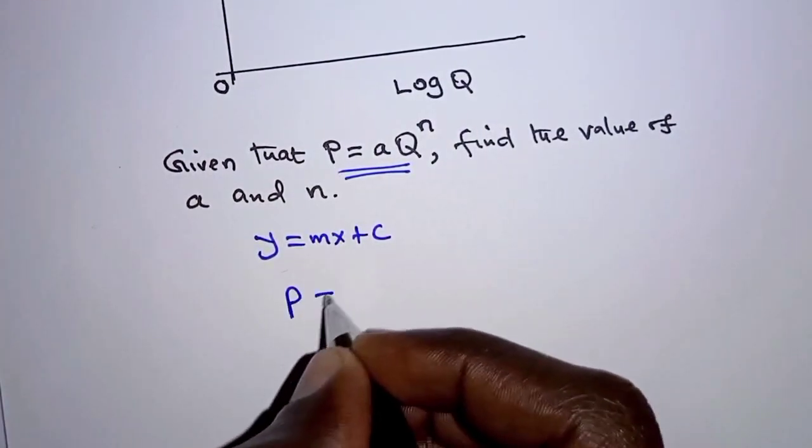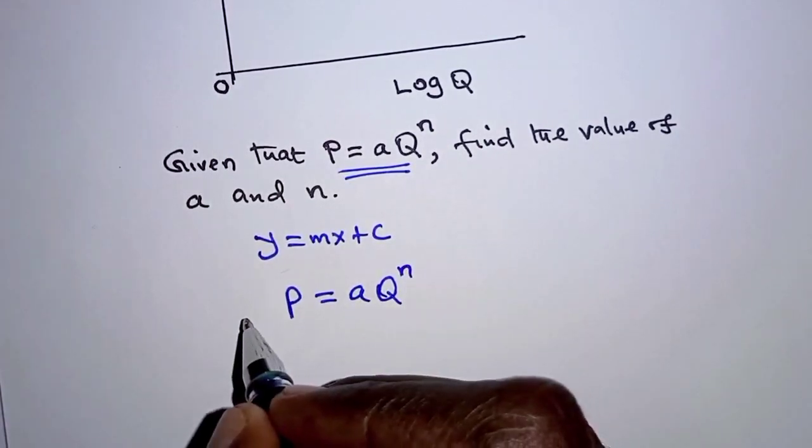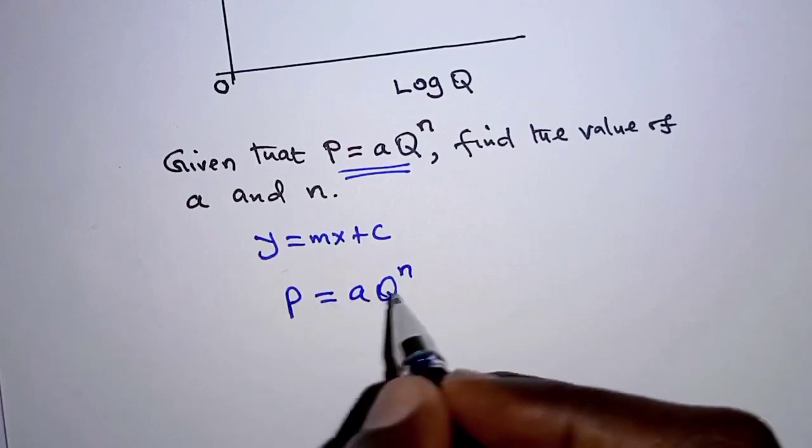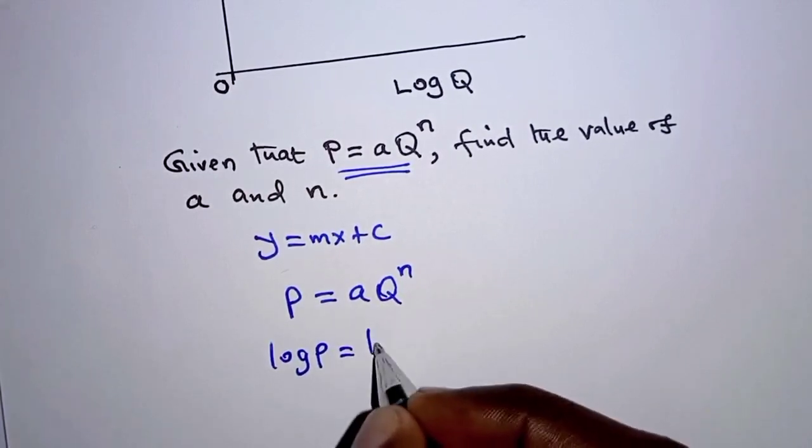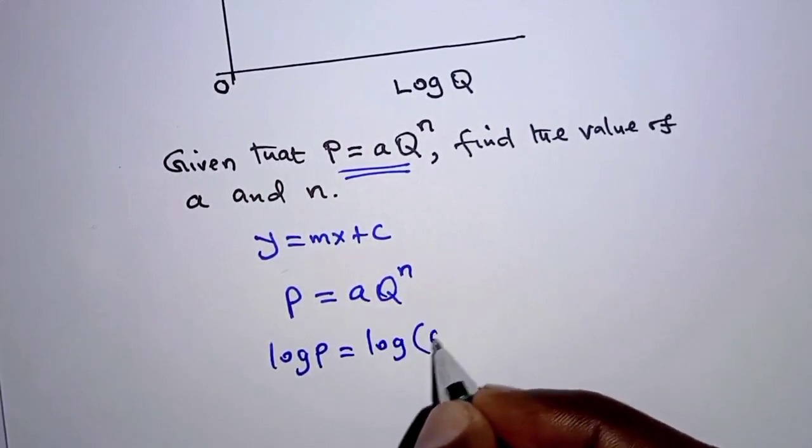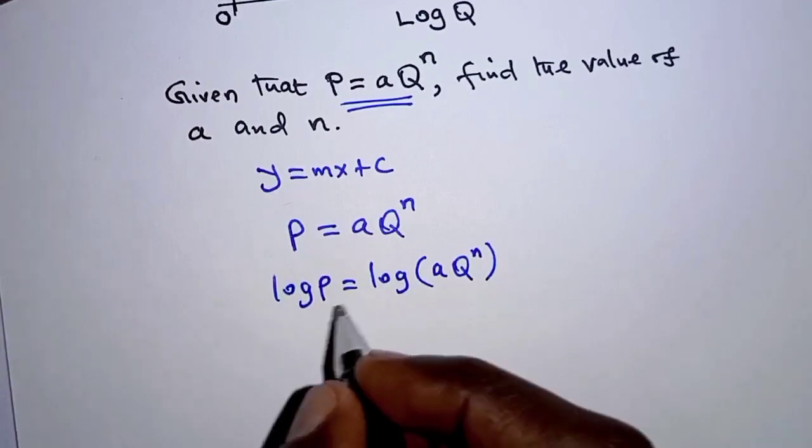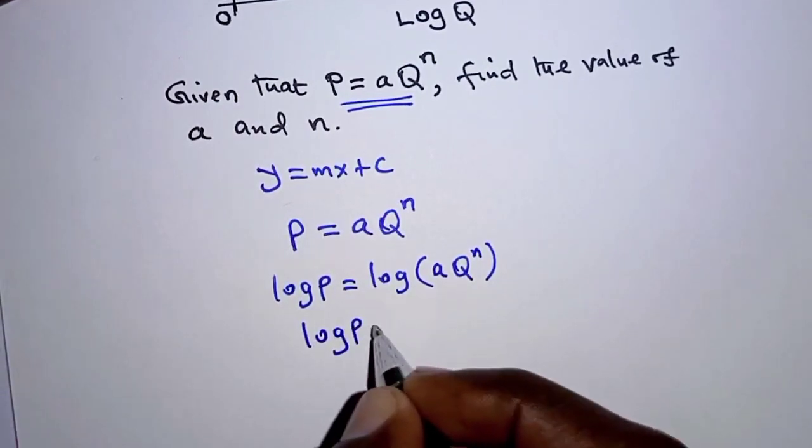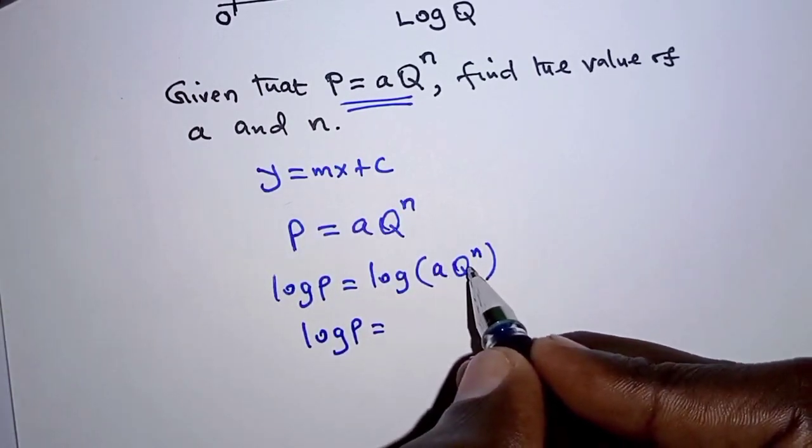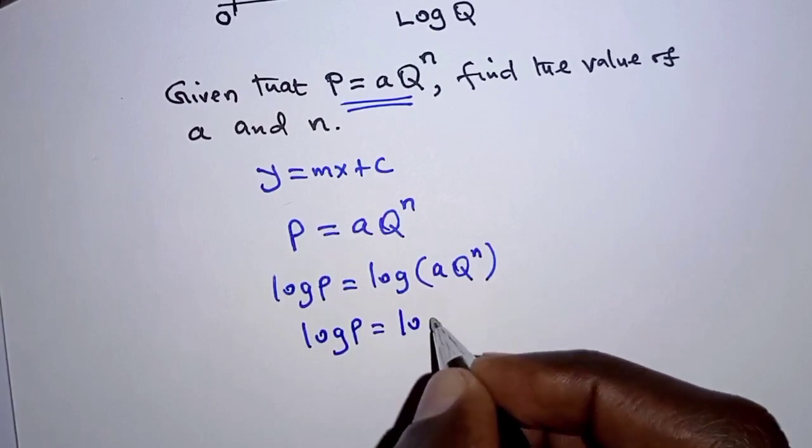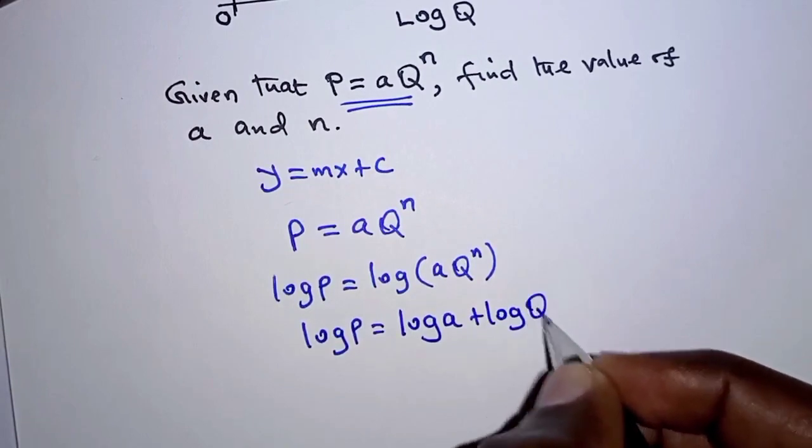We are given that P is equal to A Q raised to N and therefore we introduce common logarithms on the left hand side and right hand side. So logarithm of P is equal to logarithm of A times Q raised to N. Now on the right hand side, when you apply the laws of logarithm, multiplication implies addition of the logs. So here we'll have logarithm of A plus logarithm of Q raised to N.